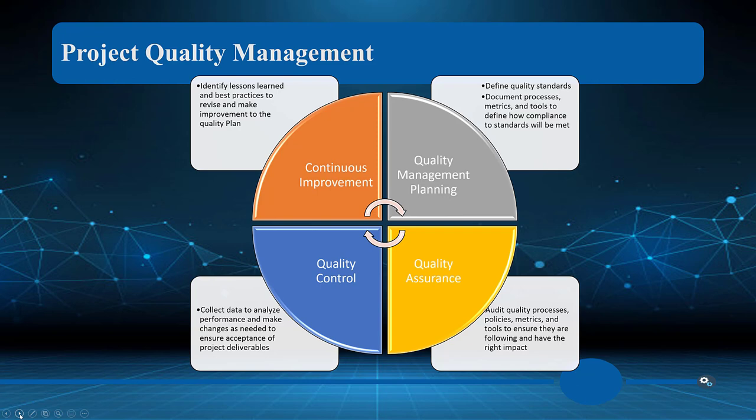Quality management is a cycle: we plan it, we assure it, we control it, and then we make continuous improvement. If we're able to take the defect rate down by 5%, we don't just stop there. If we still have a defect rate on a manufactured product, we want to take that defect rate to zero — though that may not always be possible depending on the manufacturing process.